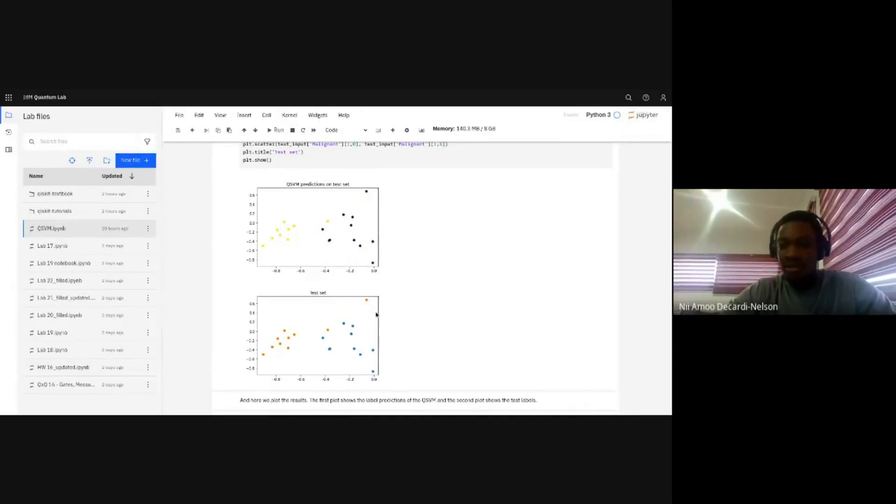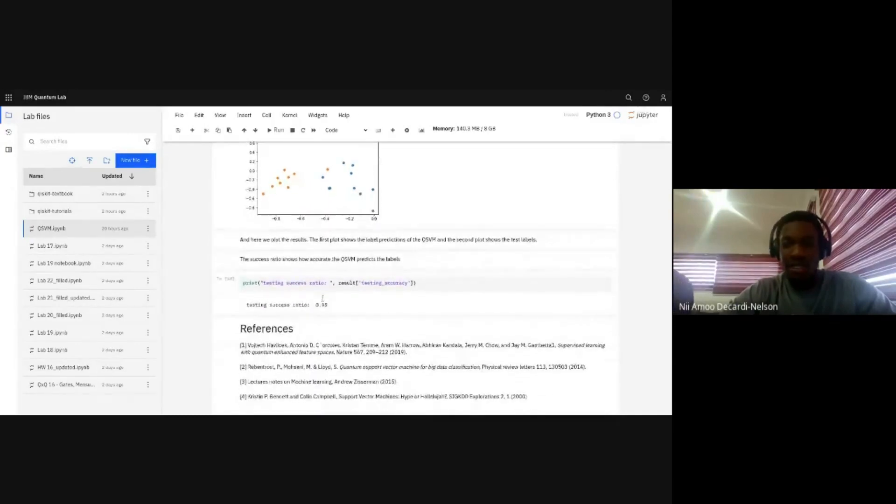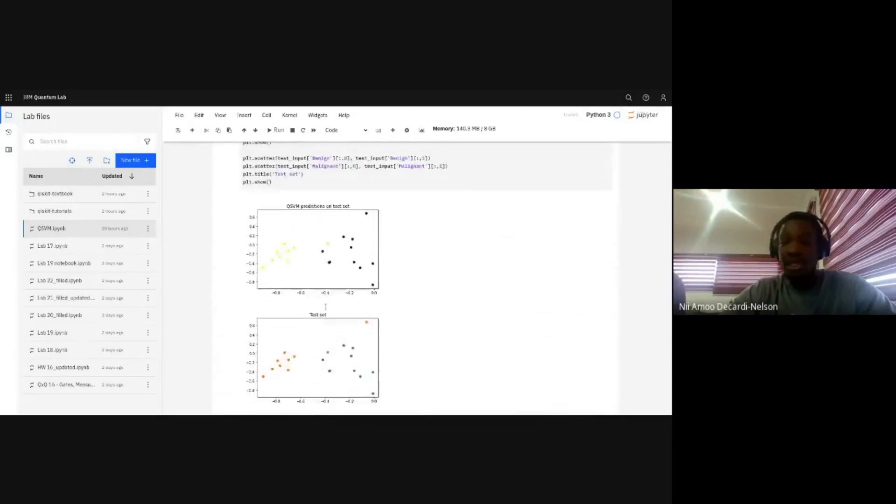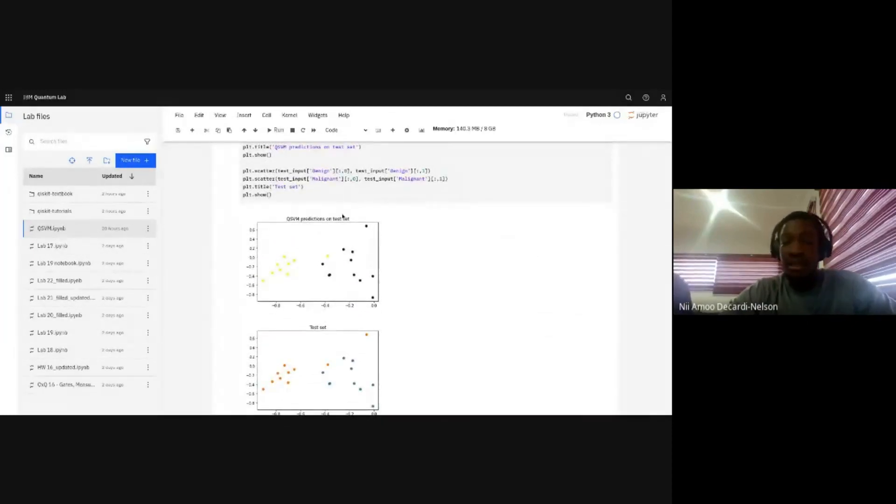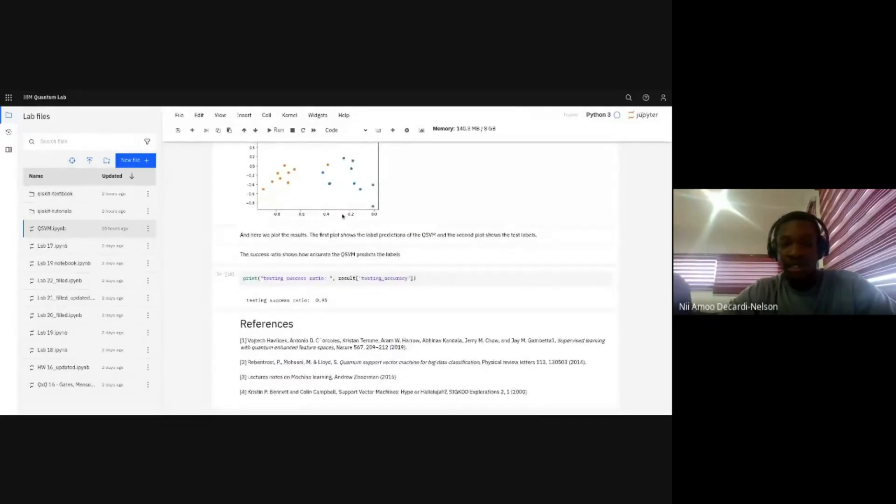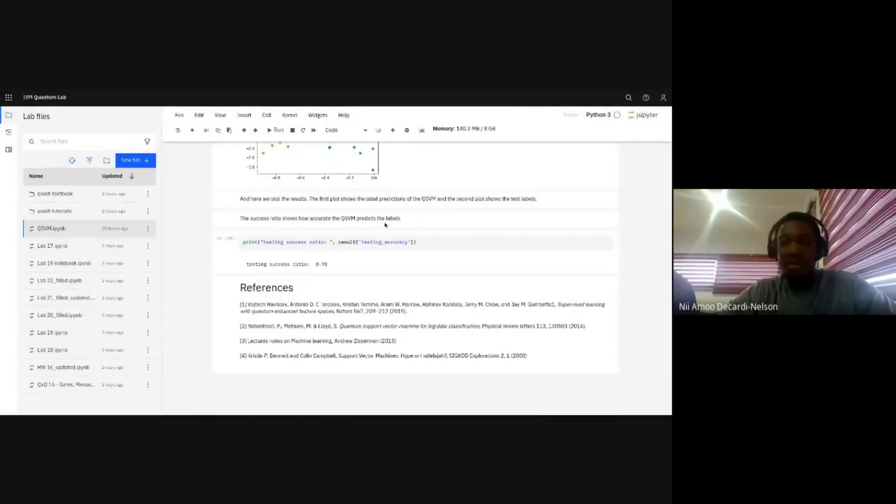And that's at the end, what we have over here is that we have an accuracy of 95%. So in this situation, our classifier was able to do better than the classical version of the quantum support vector machine. So that's the little I have for this presentation. And these are some of the references. Thank you.